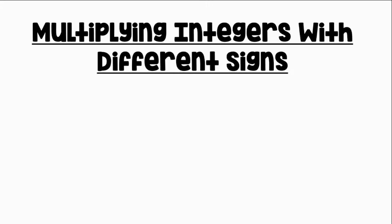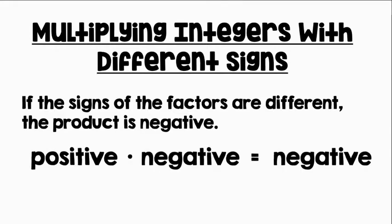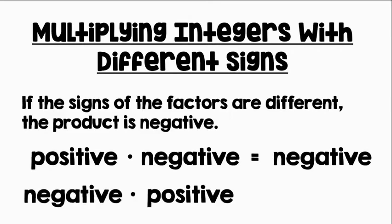Let's see our rule for multiplying integers with different signs. If the signs of the factors are different, the product is negative. A positive number times a negative number equals a negative number. Likewise, a negative times a positive equals a negative.